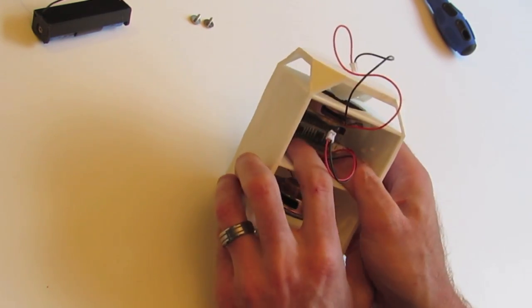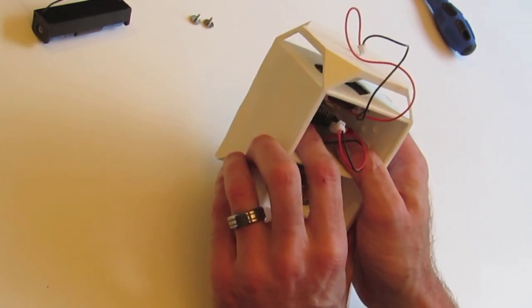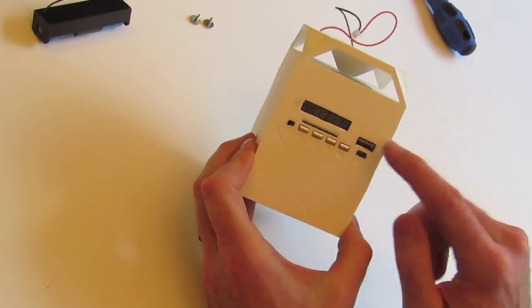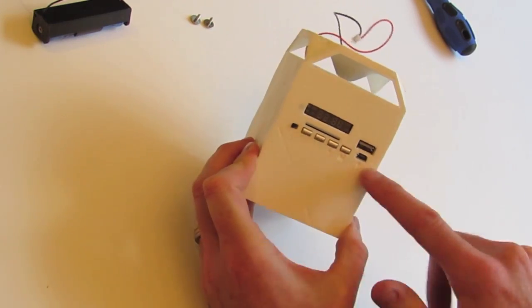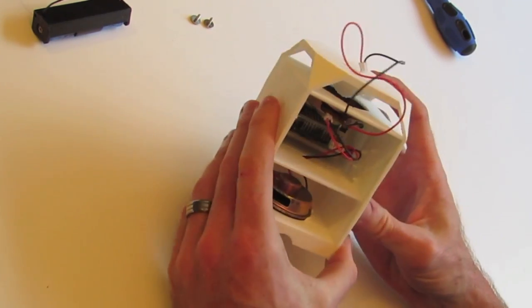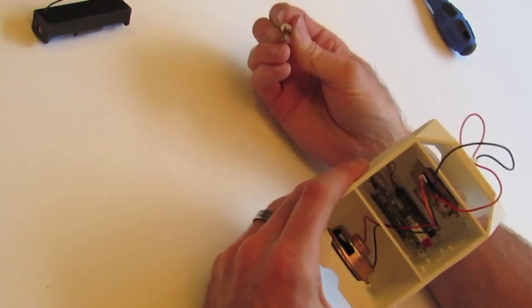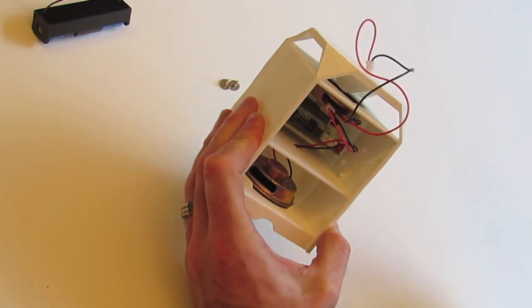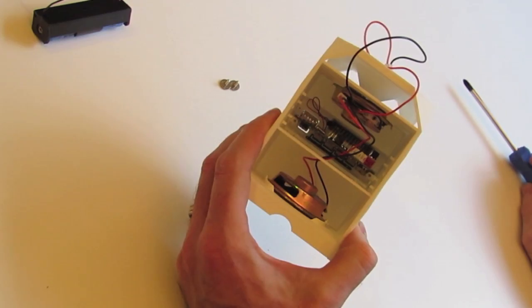So just making sure that it's pushed in on both sides, and checking that everything is coming through on the front. You can then take the two screws and put them into the corresponding holes here, and here, and that just secures the PCB in place.